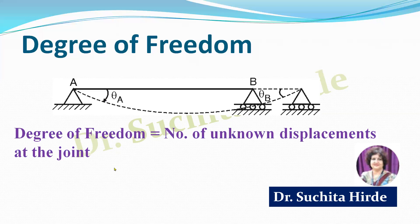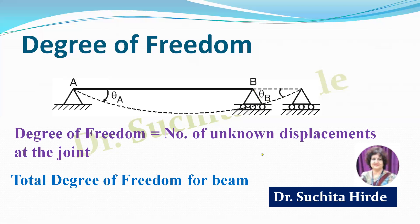Degree of freedom is defined as the number of unknown displacements at a joint. In beam AB, at the hinge support, the joint cannot translate but it can rotate, hence the degree of freedom is 1. At joint B, which is a roller support, the joint can translate in the horizontal direction as well as rotate, hence degree of freedom at roller support is 2. Therefore, the total degree of freedom for this beam is 1 plus 2, equal to 3.